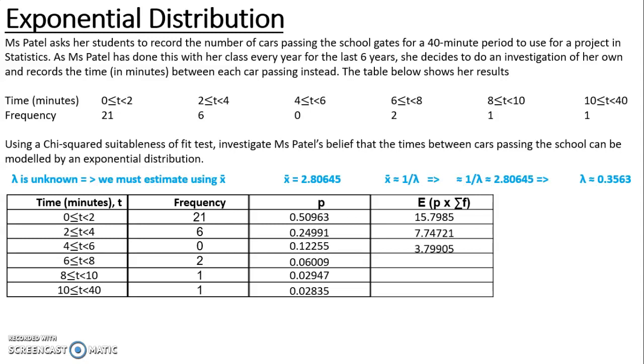It gives me 15.7985, 7.74721, 3.7995, 1.86279, 0.91357, and 0.87885.